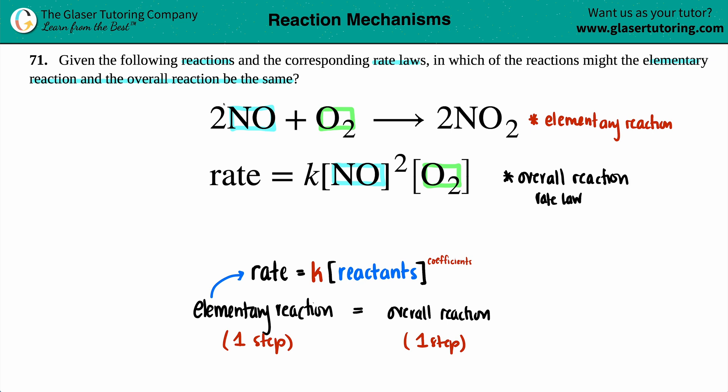We have a 2 for NO. And look, NO is raised to the second. That checks out. You have one O2 in my equation, and O2 is raised to the first. So everything checks out. Those exponents are the coefficients. If that is the case, that means that this is the only step of the process. It exactly mimics the rate law.